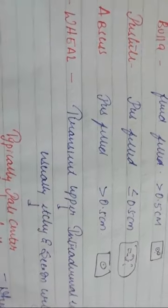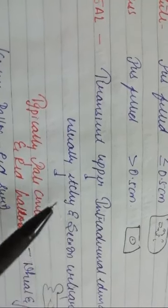Next is wheal. It is a transient upper intradermal edema. We know we have an epidermis and dermis — the wheal involves a transient edema in the upper dermis. It is usually itchy and seen in urticaria. The transient upper intradermal edema is what we call a wheal.